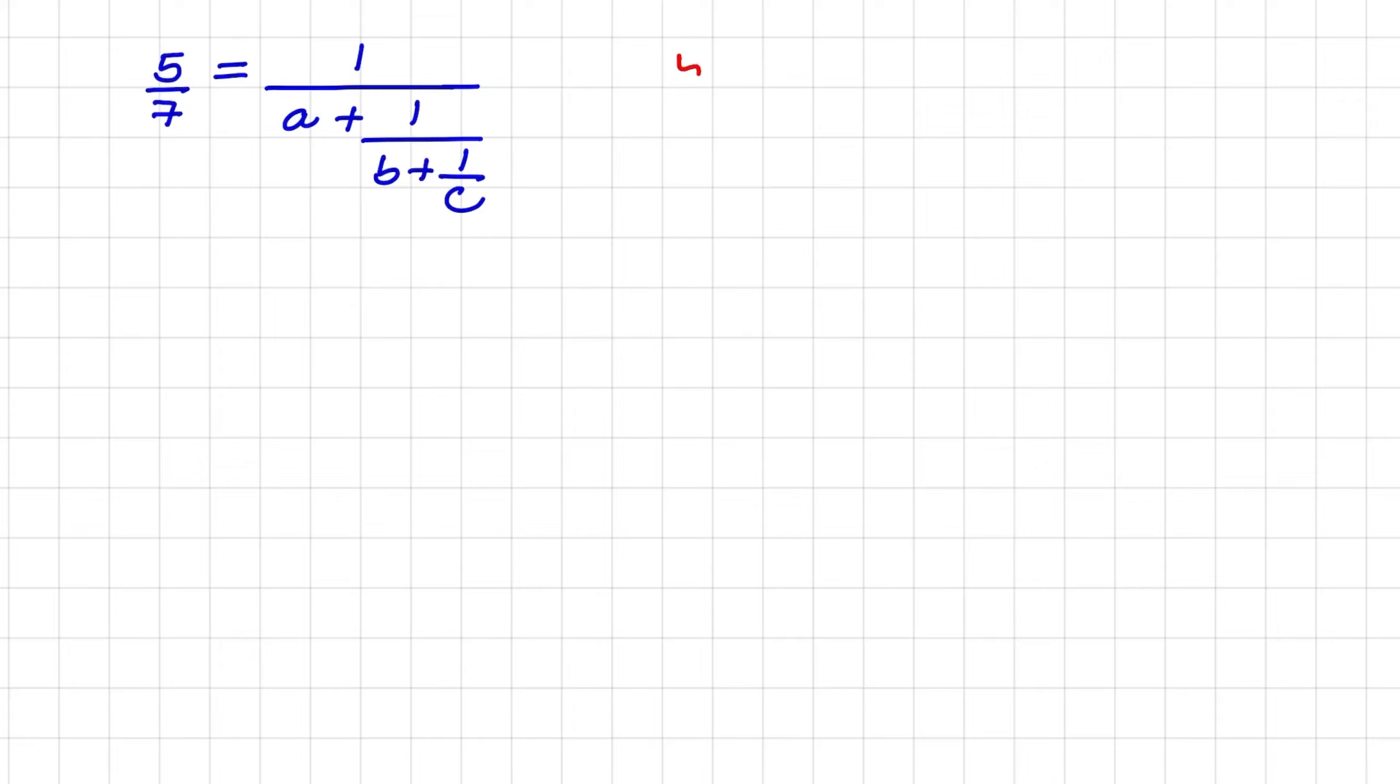So if I have 5 over 7, I know that that is equal to 1 times 5 over 7. And if I use the tip and times rule, that is equal to 1 divided by 7 over 5.